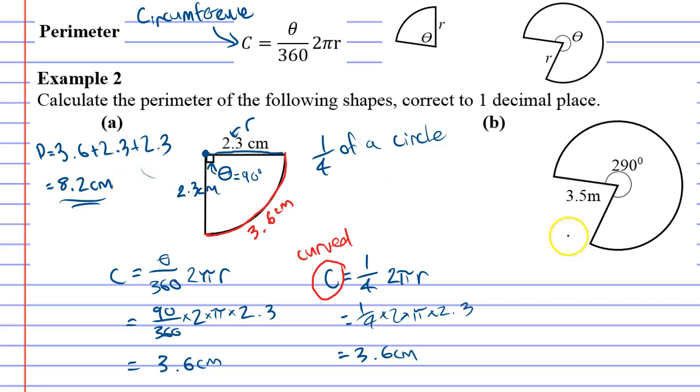Let's look at question B. We're going to do the same sort of thing. This one, we don't really know what fraction of a circle it is, so we have to use the original formula: theta over 360 times 2 pi R. Theta being 290, the angle, and R being the radius, which in this case is 3.5.